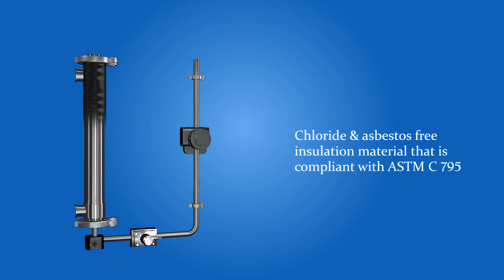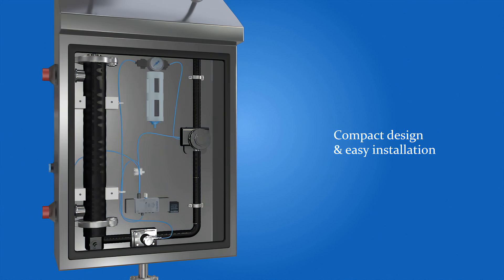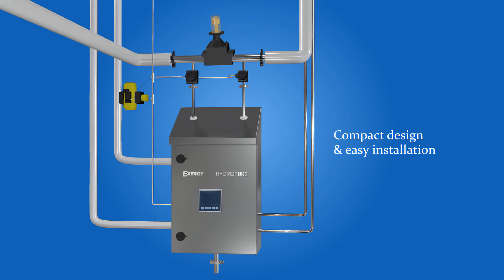The process and utility lines inside the cabinet are insulated with ASTM C compliant chloride and asbestos free materials. It's compact and can be easily installed in the manufacturing area.